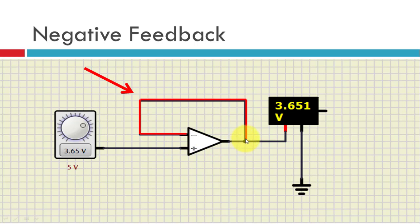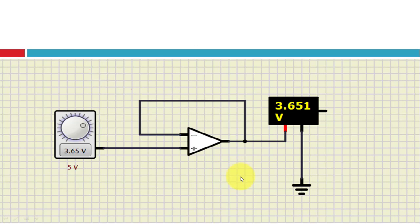So the output is connected again to the input at the inverting end. So because it is connected at the inverting end, it is called as the negative feedback. Negative feedback has the advantage that it actually increases the circuit stability and this is how the circuit will work.